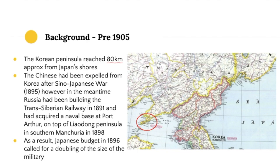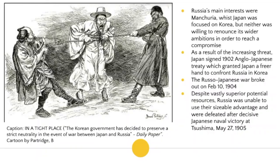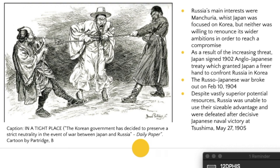Japan was obviously very fearful of this. They doubled their military budget in 1896. We've already spoken about the militarism, the Meiji Restoration, and the rise of nationalism within Japan. Japan's interests were primarily focused on Korea, while Russia's main interests were in controlling Manchuria, and this resulted in the Russo-Japanese War.